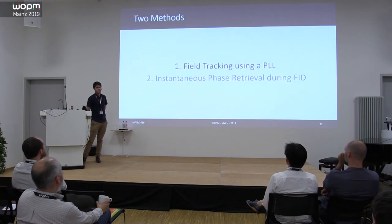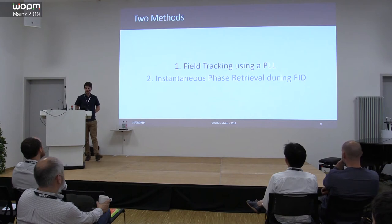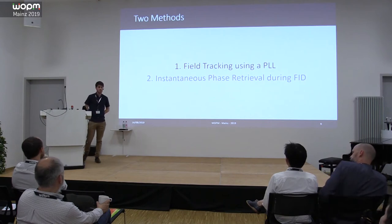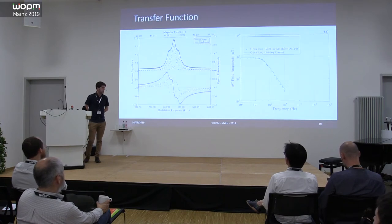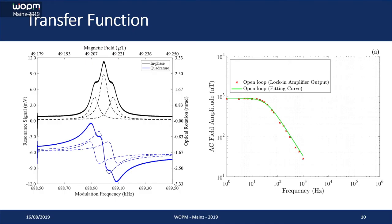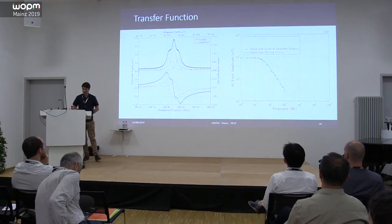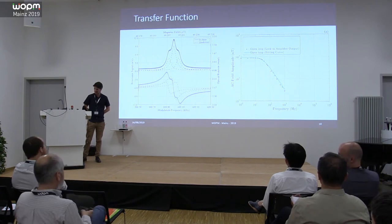We're using two methods to create a wideband magnetometer and track large perturbations in Earth field. The first is using a PLL, very similar to what Victor introduced us to this morning. The second is instantaneous phase retrieval using a free induction decay. If we sit in the middle of the resonance and apply a magnetic modulation to our field, what we see is that the response falls off as a low-pass filter, with a bandwidth the same as your Larmor resonance. This isn't surprising to many of us, and it's something we need to compensate for in our noise floors.